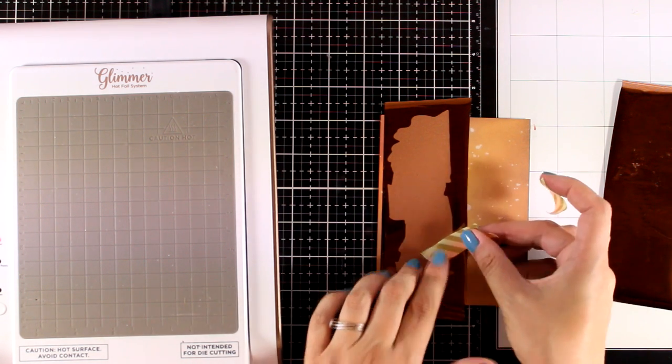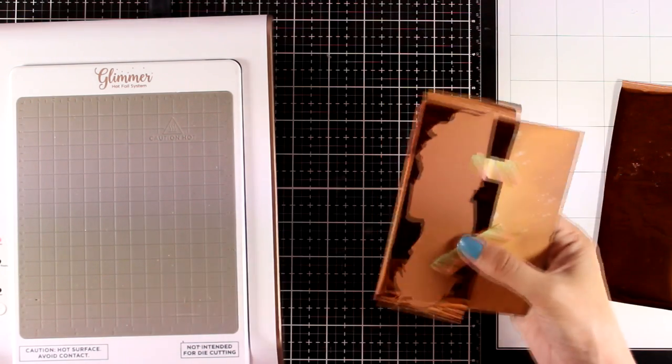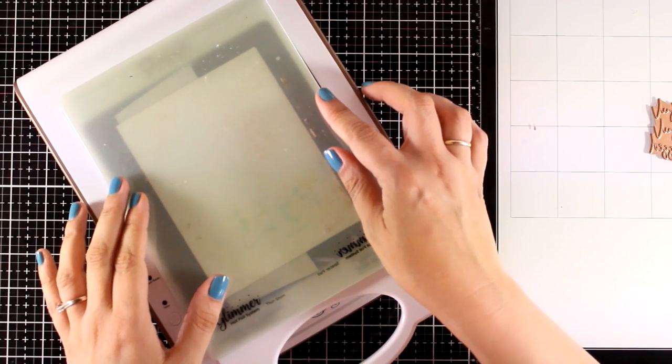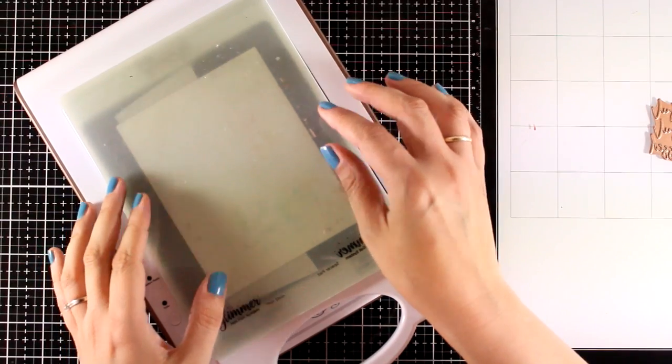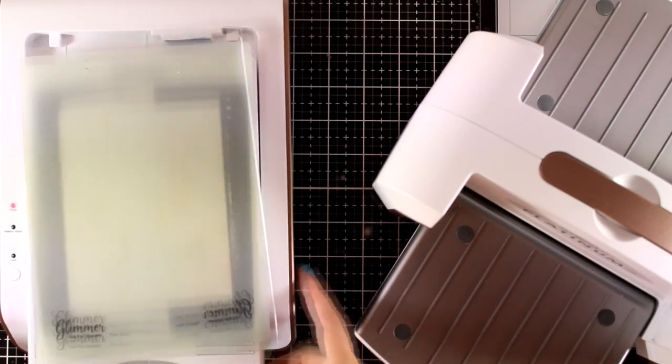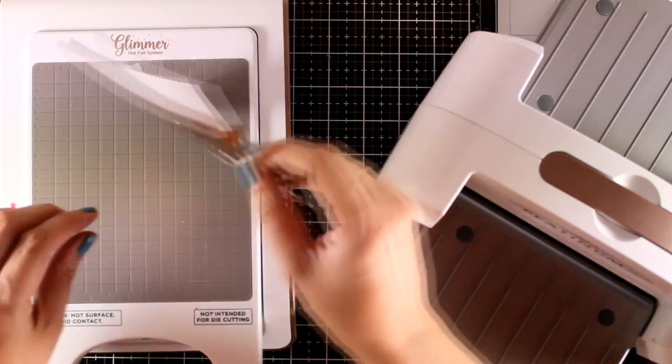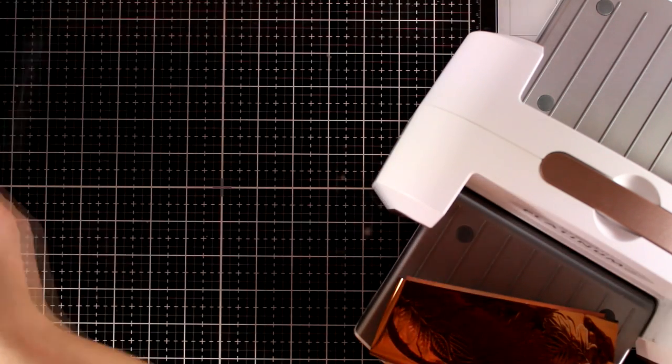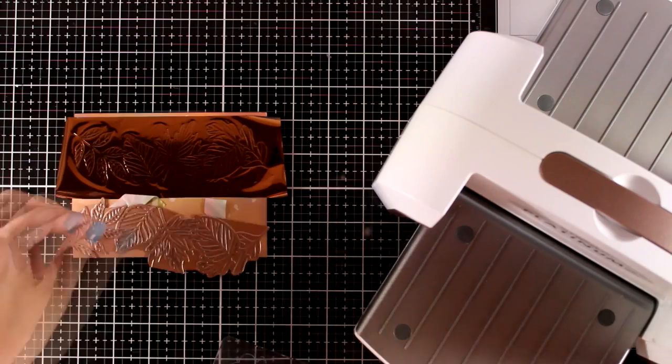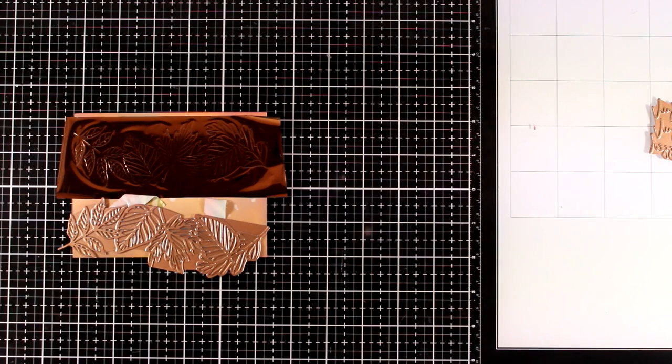Many times when you try to remove the platform from the machine, it kind of moves, so it's better safe than sorry. Once I get the indication that my plate is nice and warm, I'm going to run it through my die cutting machine. Now we can lift the foil and see together what we've got. This is always a lovely process—I absolutely love when I get to peel off the foiling and see the results.